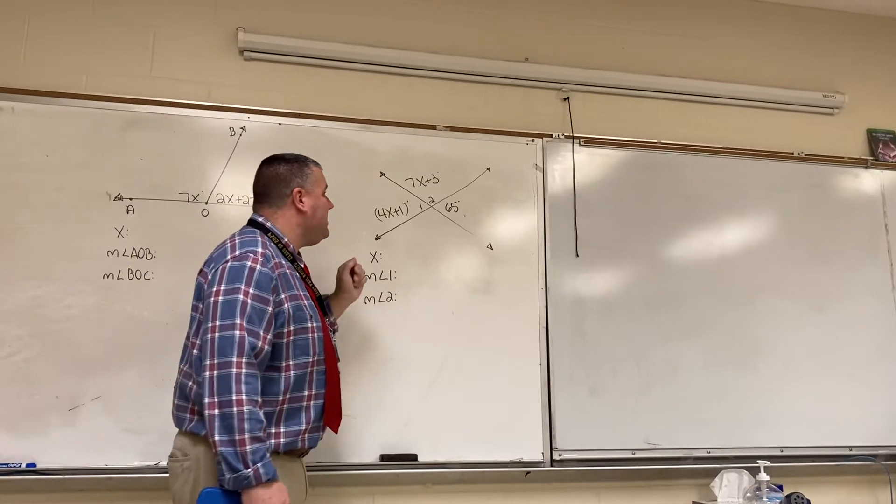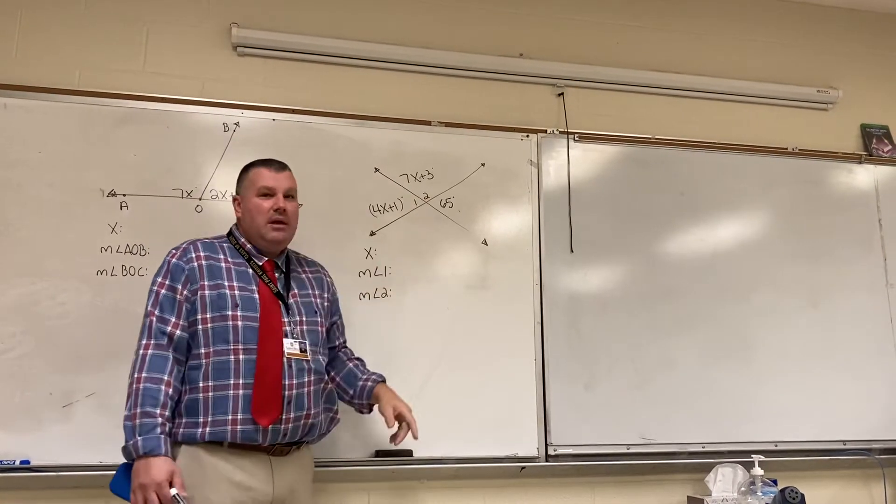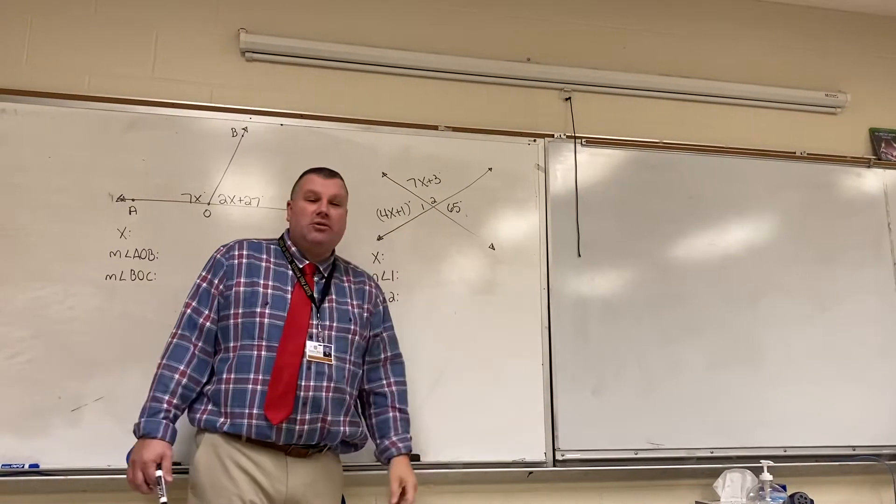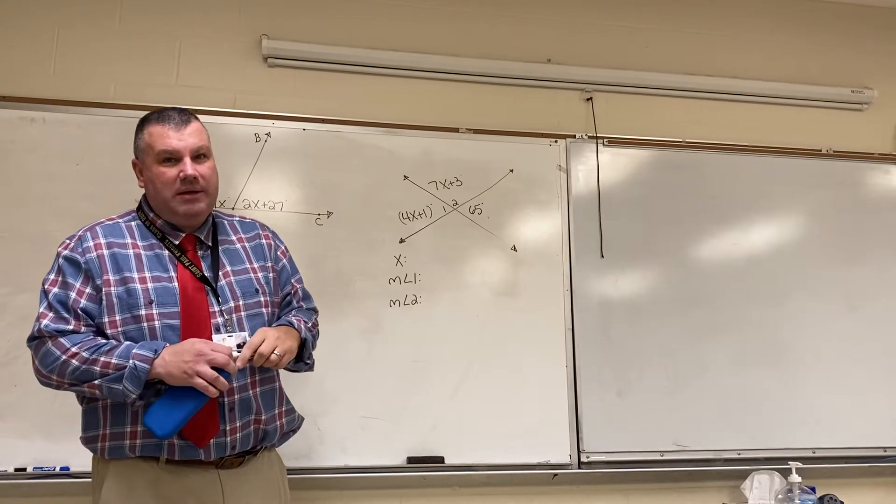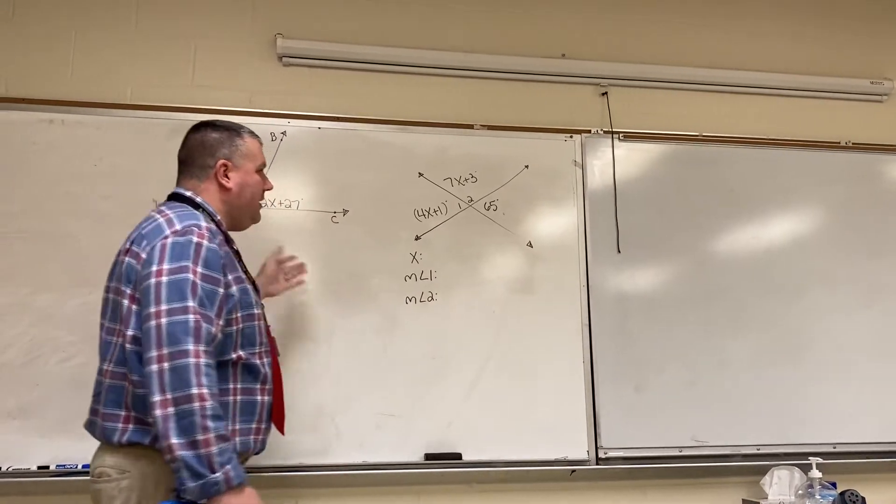Then if you look at 7x plus 3 and 65 degrees, those two angles form a straight line, which is called a linear pair. A straight line, as we know, is equal to 180 degrees. So, knowing that, let's go through and solve this.